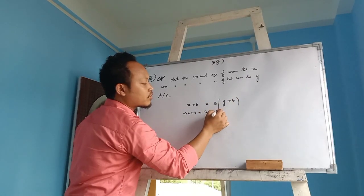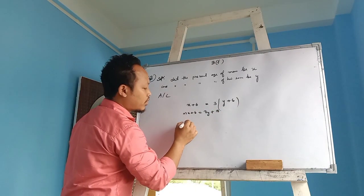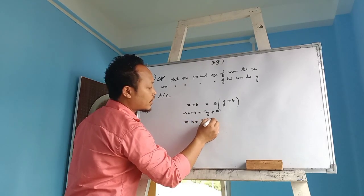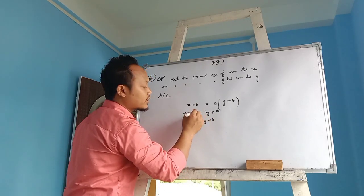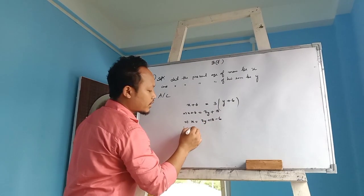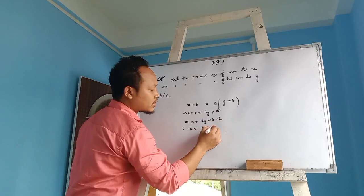3 times 6 is 18. Let us know, yes or no. X plus 6 equals 3y plus 18. So this plus 6 will become minus 6. Therefore x equals 3y plus 18 minus 6.